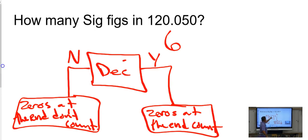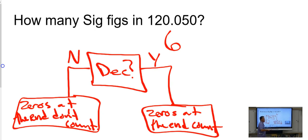So the question was: does this number have a decimal? Yes. Zeros at the end count — one, two, three, four, five, six is the answer here. Over 80% of you put five. They both count; there could be 100 and they would count.